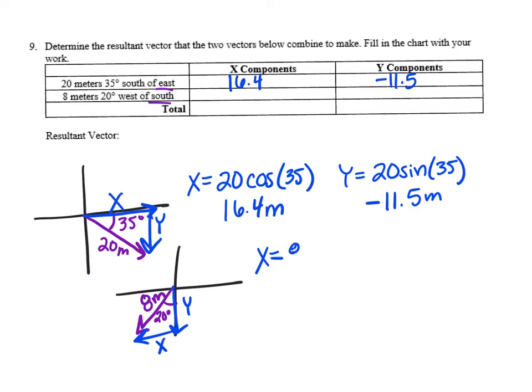In this case, x is the opposite side, so you're going to use sine this time. It'd be 8 sine 20. In the calculator you're going to get 2.7, and we're going to make that x negative because it's headed west. For the y, you're going to use 8 cosine because it's adjacent to your angle. So 8 cosine 20, that is going to equal 7.5.